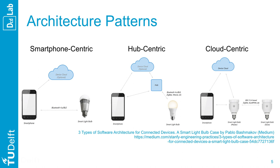Hub-centric architectures involve a local hub, similar to a home internet router. This hub often plays the role of a gateway, translating a local protocol — such as Zigbee or Z-Wave — into the Internet Protocol, IP. In this setting, phones interact with devices via the hub. The hub is continuously available and offers higher computational capabilities than devices.